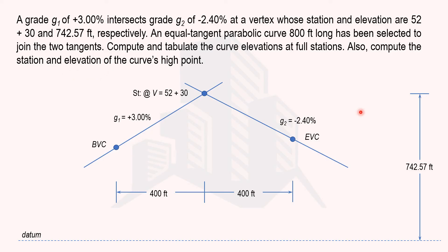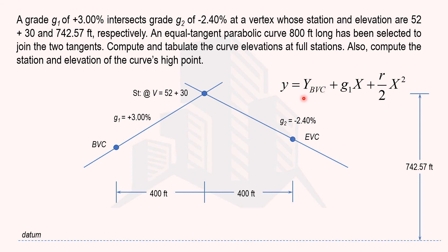To determine the elevation at different points on the vertical curve, the formula is: elevation = y_BVC + g1·x + (r/2)·x², where y_BVC is the elevation at the beginning point, g1 is grade 1, x is the distance from BVC, and r is the rate of change of grade. We don't yet know the elevation at BVC, but since we know the elevation at the vertex, we can work backwards.